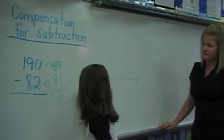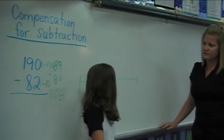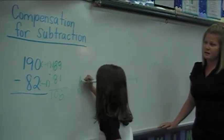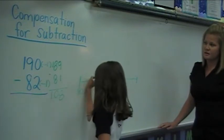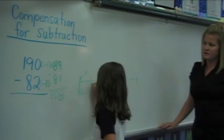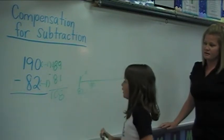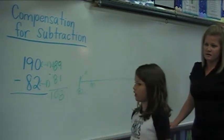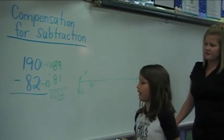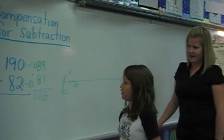I'm going to start at eighty-two because that's the smaller number. I'm going to add eight to land on ninety because ninety is a landmark number and it's easier to add with a landmark number.